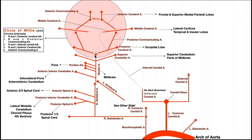The basilar artery then bifurcates into a right and a left posterior cerebral artery — note it's cerebral, not cerebellar. As soon as the basilar artery bifurcates this way, we start to form the circle of Willis, also called the circulus arteriosus. This is a circle of anastomosing arteries providing major blood supply to different parts of the cerebrum. The anastomosis allows alternate blood flow in the event of a blockage, serving as a protective mechanism.